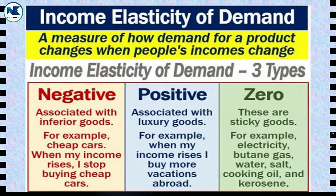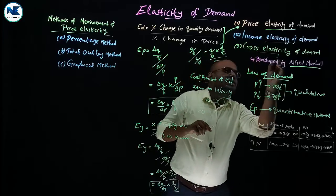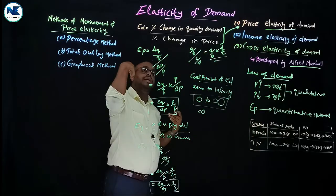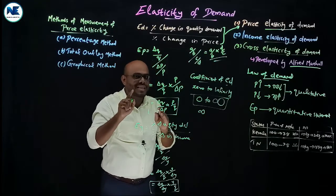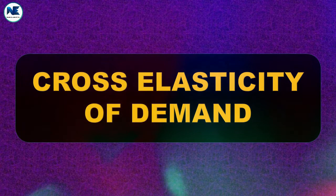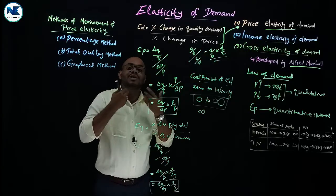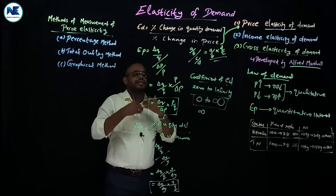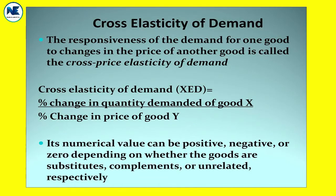Now, cross elasticity of demand. This is an important topic — you can expect exam questions on price elasticity, income elasticity, and cross elasticity. Cross elasticity of demand is the responsiveness of demand for one commodity to changes in the price of a related commodity. Cross elasticity of demand equals the percentage change in quantity demanded of one commodity divided by the percentage change in the price of a related commodity.